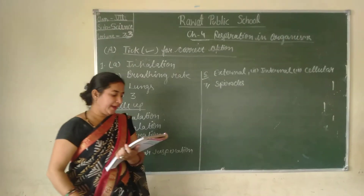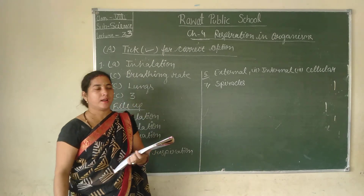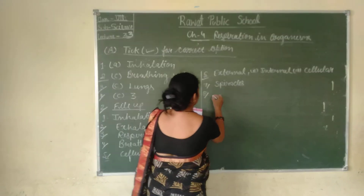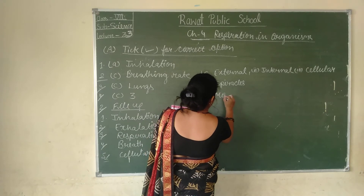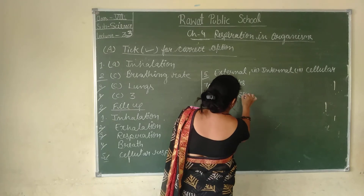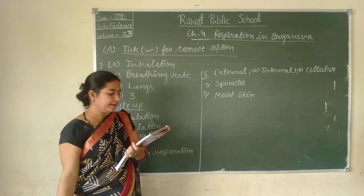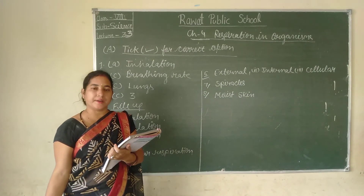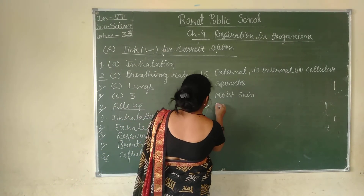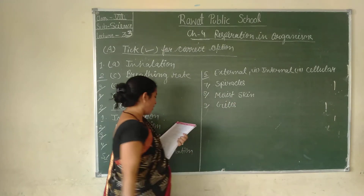The eighth question is: earthworms breathe through their moist skin. The answer is moist skin. Question number nine: which organ has a rich supply of blood? The answer is gills — gills have a rich supply of blood.